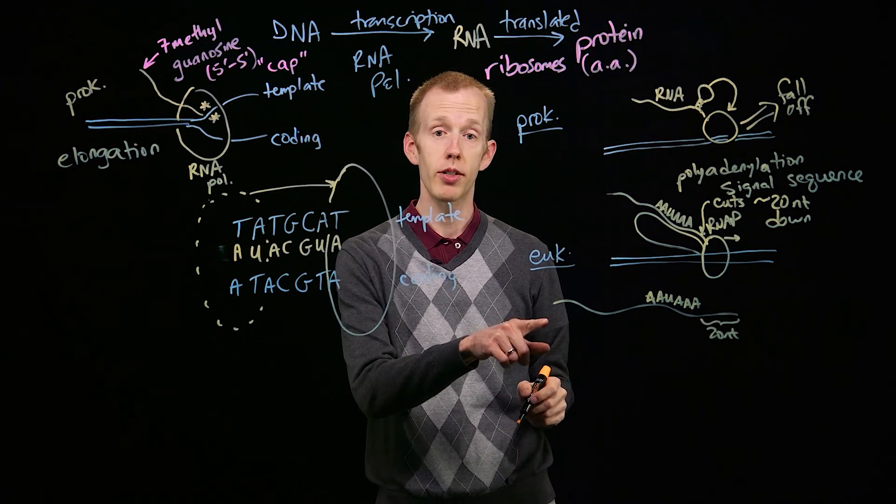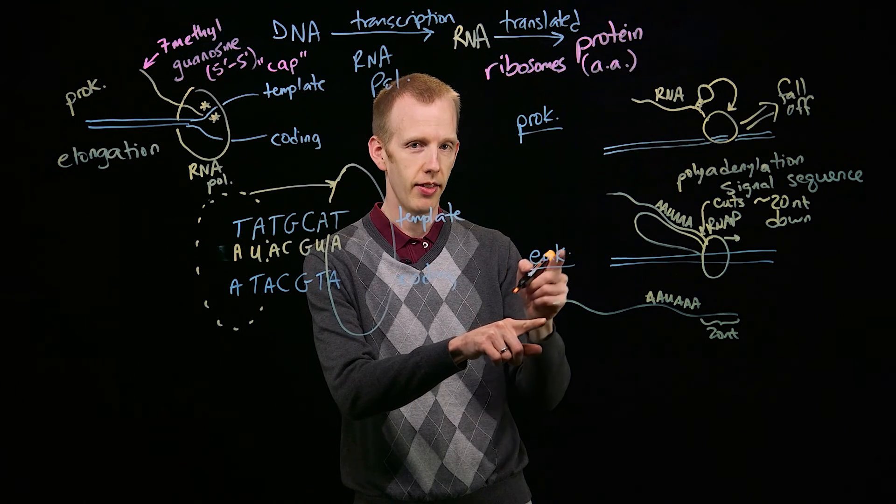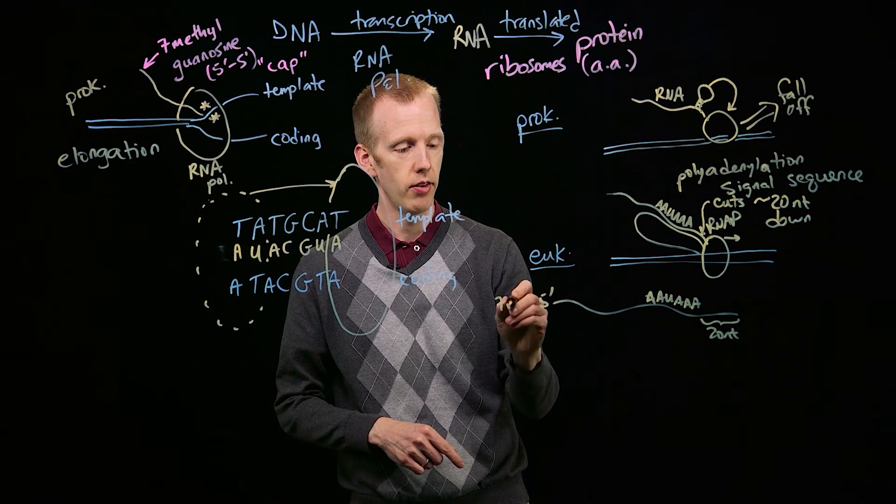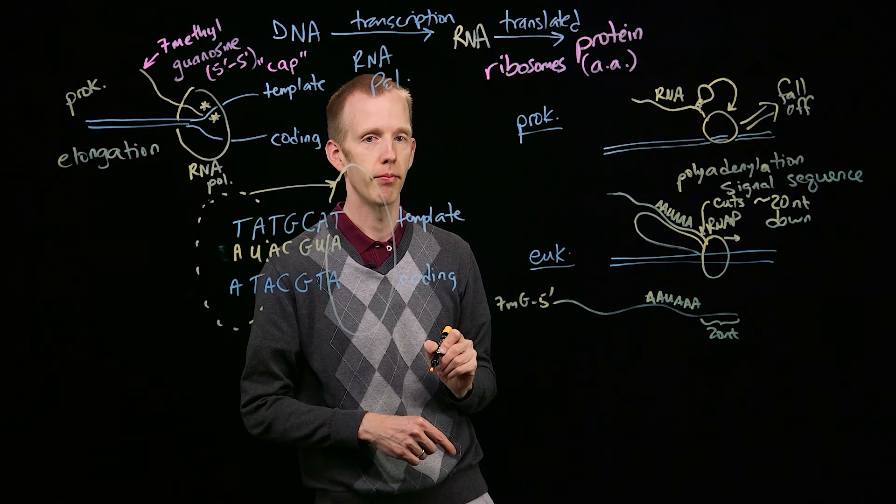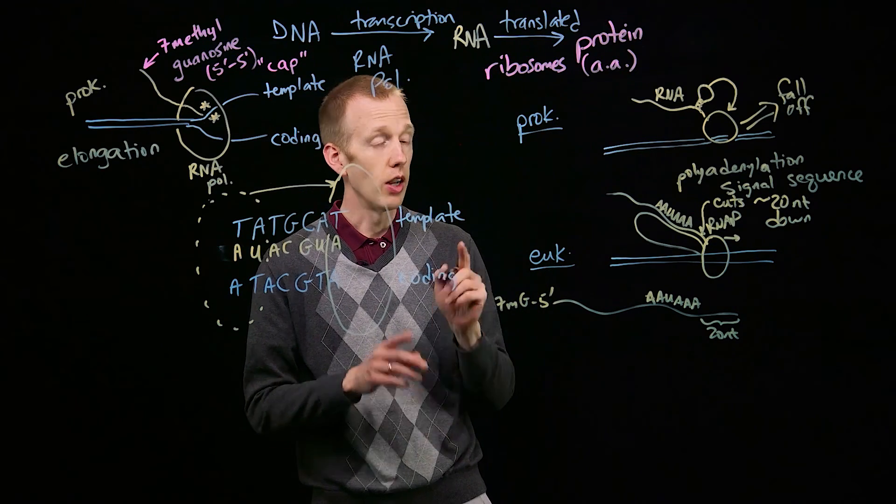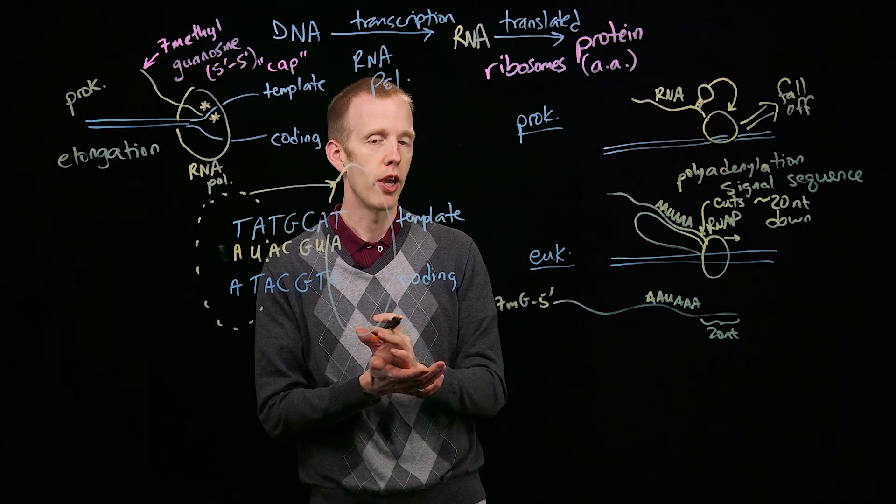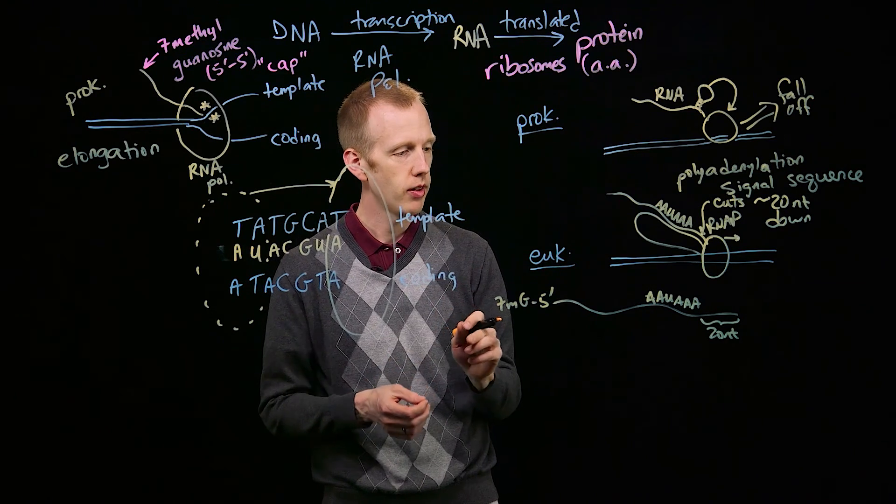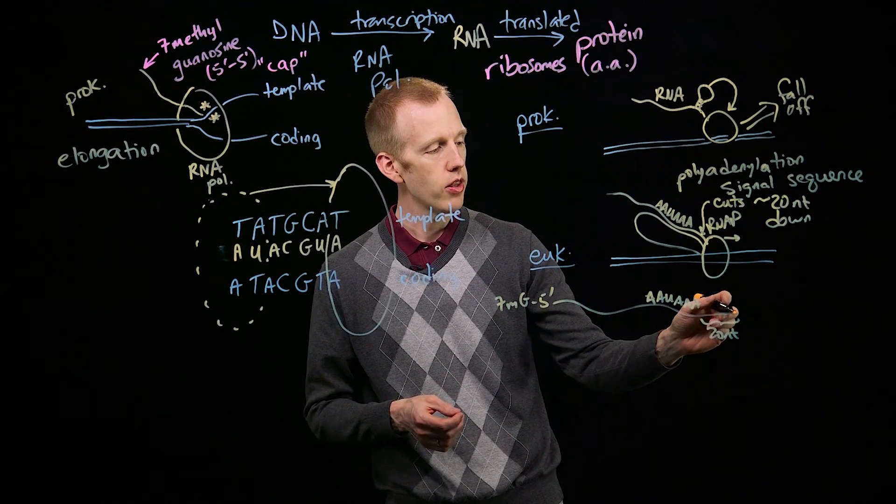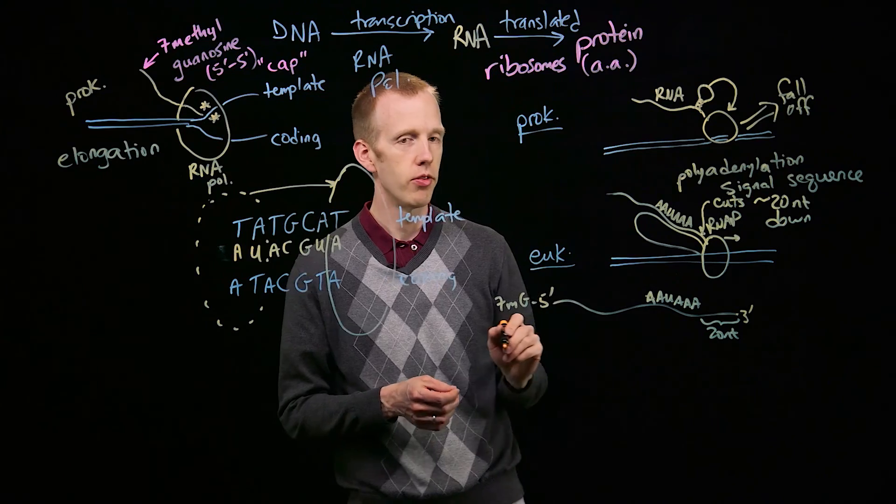By the way, what's up here? That's the 5' end, and it's going to have the 7-methylguanine cap on it. The last step in eukaryotic transcription termination is that at the very 3' end of the transcript, after it gets cut about 20 nucleotides downstream of that poly-A signal sequence...